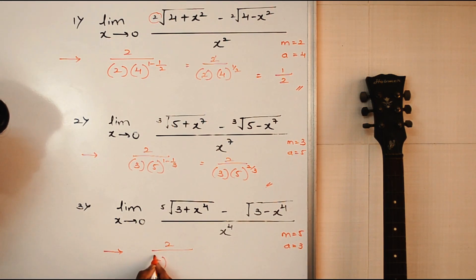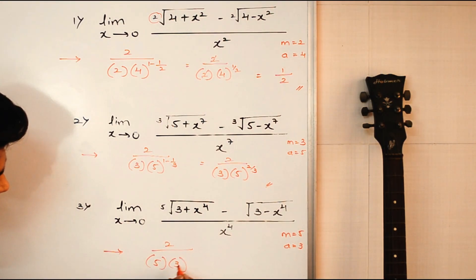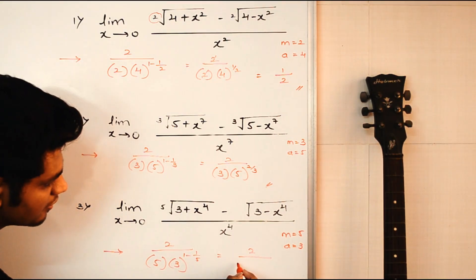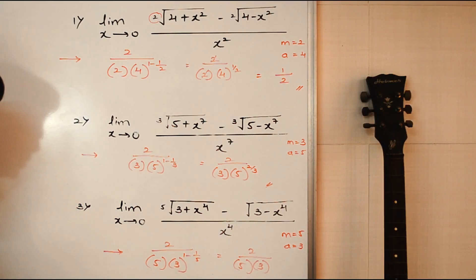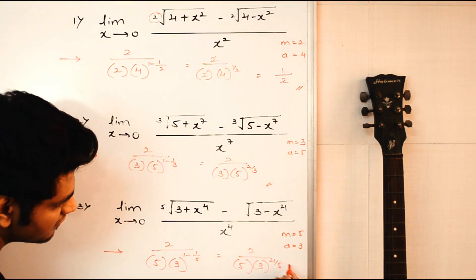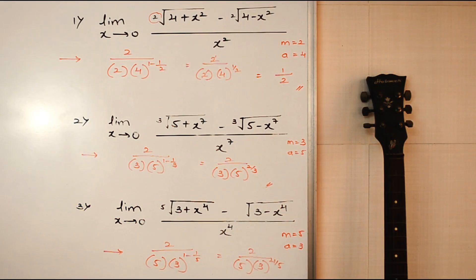m value is 5, a value is 3, 1 minus 1 by 5. So this will be 2 upon 5 into 3 raised to 1 minus 1 by 5, which is 4 by 5. And that's it, this is our final answer.